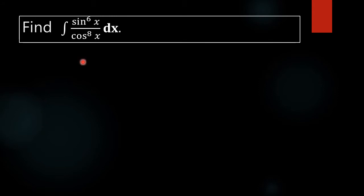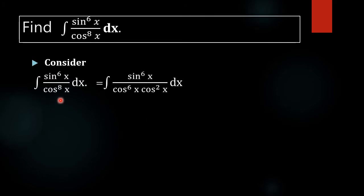So for that, at first we are going to rewrite this integral in the form that we can integrate easily by our known techniques. Okay, so what we have here is integral of sin raised to 6x by cos raised to 8x dx.